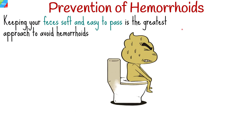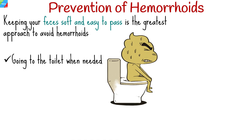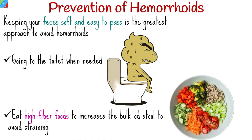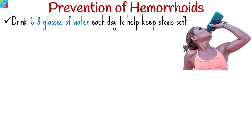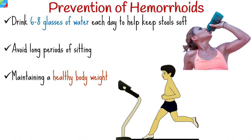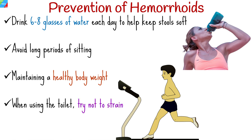Keeping stools soft and easy to pass is the best approach to avoid hemorrhoids. This can be achieved by going to the toilet when needed — the longer you wait, the drier the stools will be — eating high-fiber foods to increase stool bulk and avoid straining, drinking six to eight glasses of water each day to keep stools soft, avoiding long periods of sitting, maintaining a healthy body weight, and not straining when using the toilet, as this creates pressure in the veins of the lower rectum.